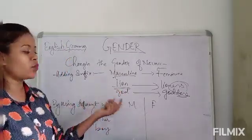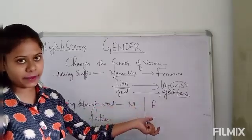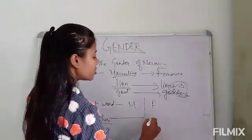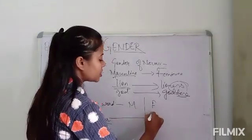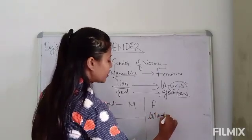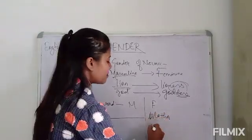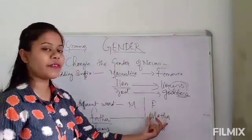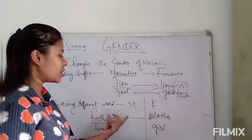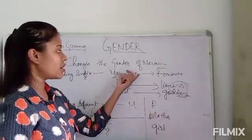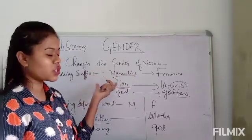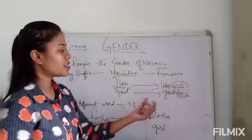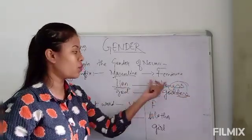We can also see a different word used for masculine and feminine. Like if it is 'father' in masculine, it will change into 'mother'. If it is 'boy', then it will become 'girl'. So we can see two completely different words for masculine and feminine. But when adding a suffix, it is the same word with just a few letters added at the end.